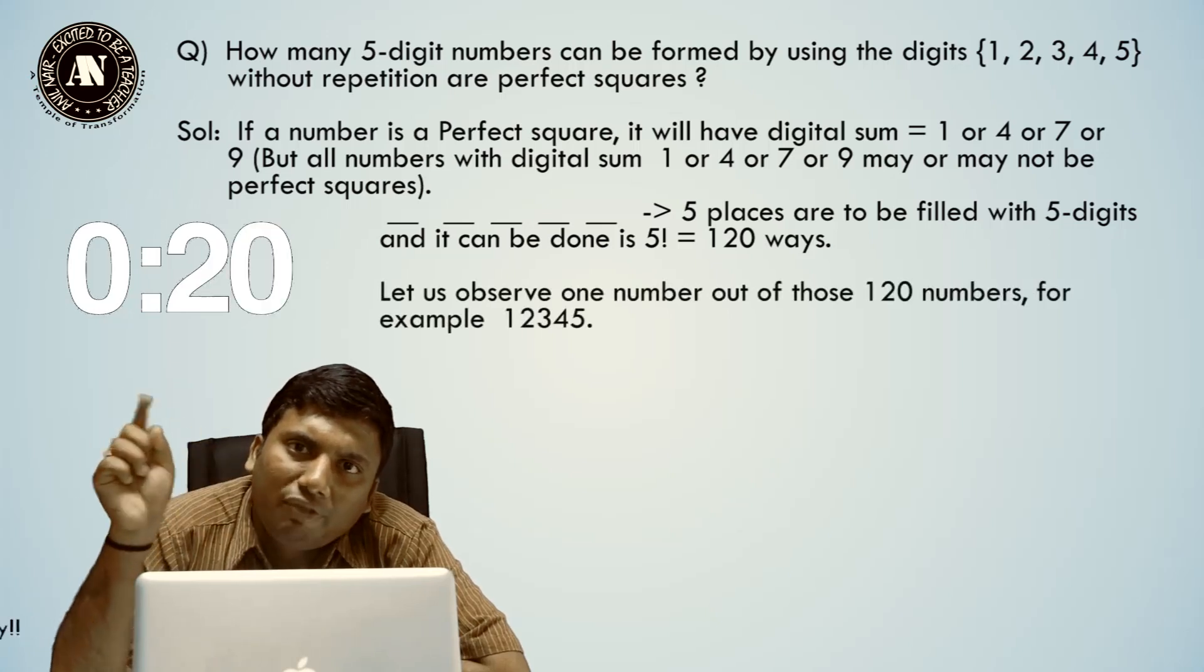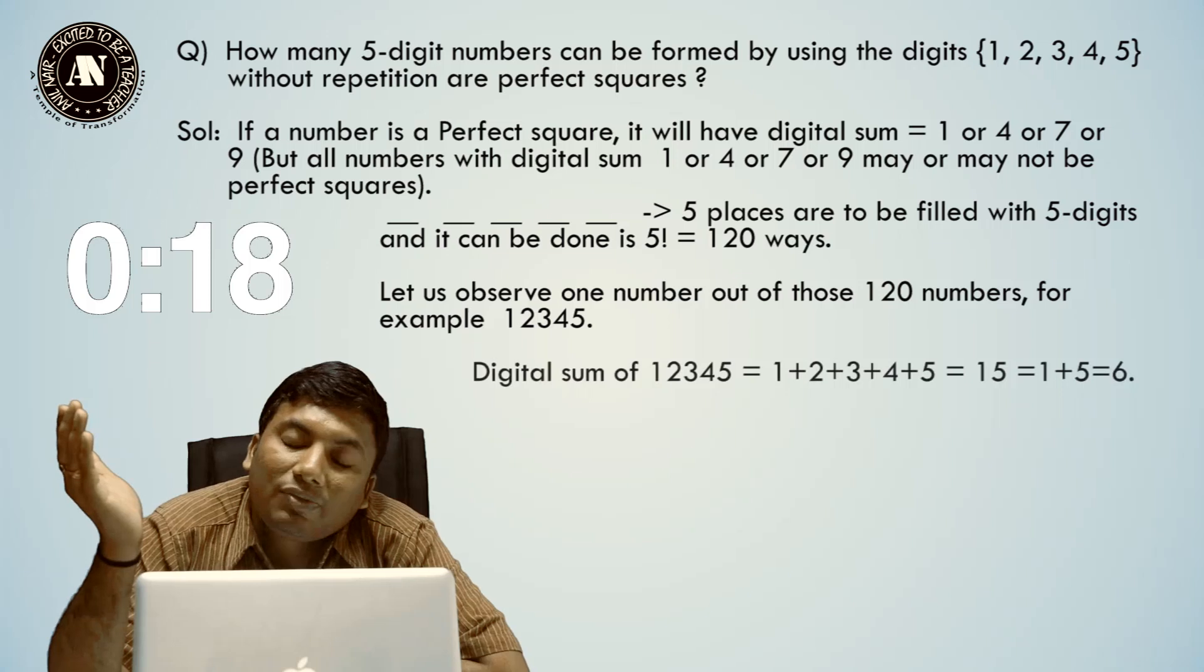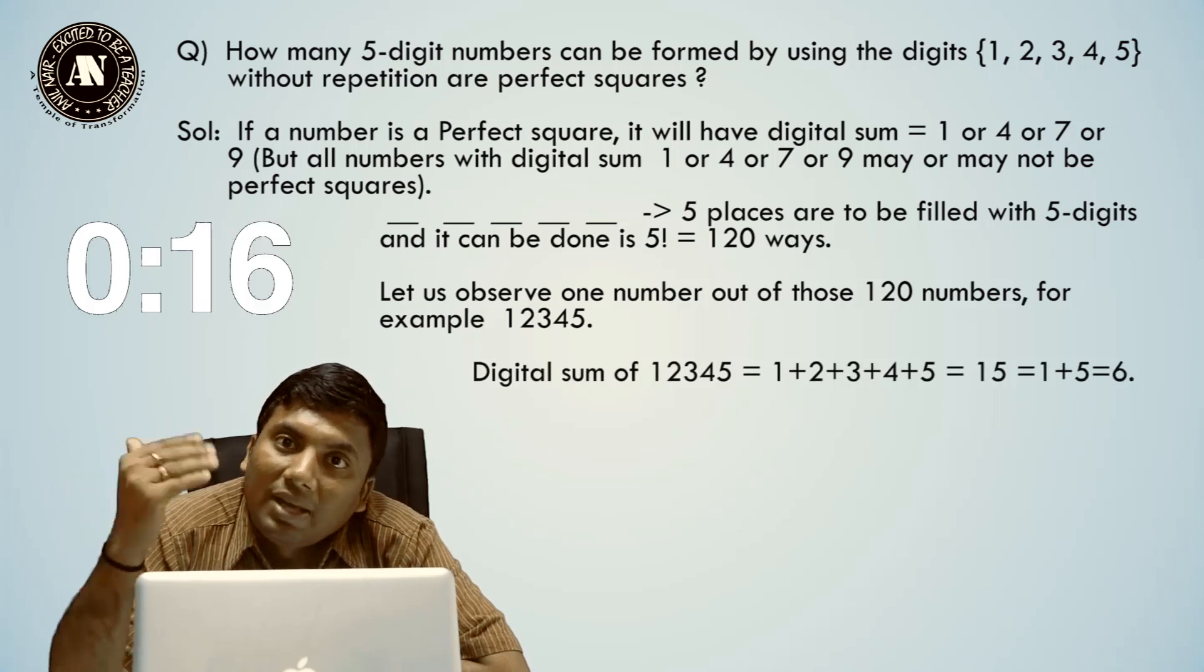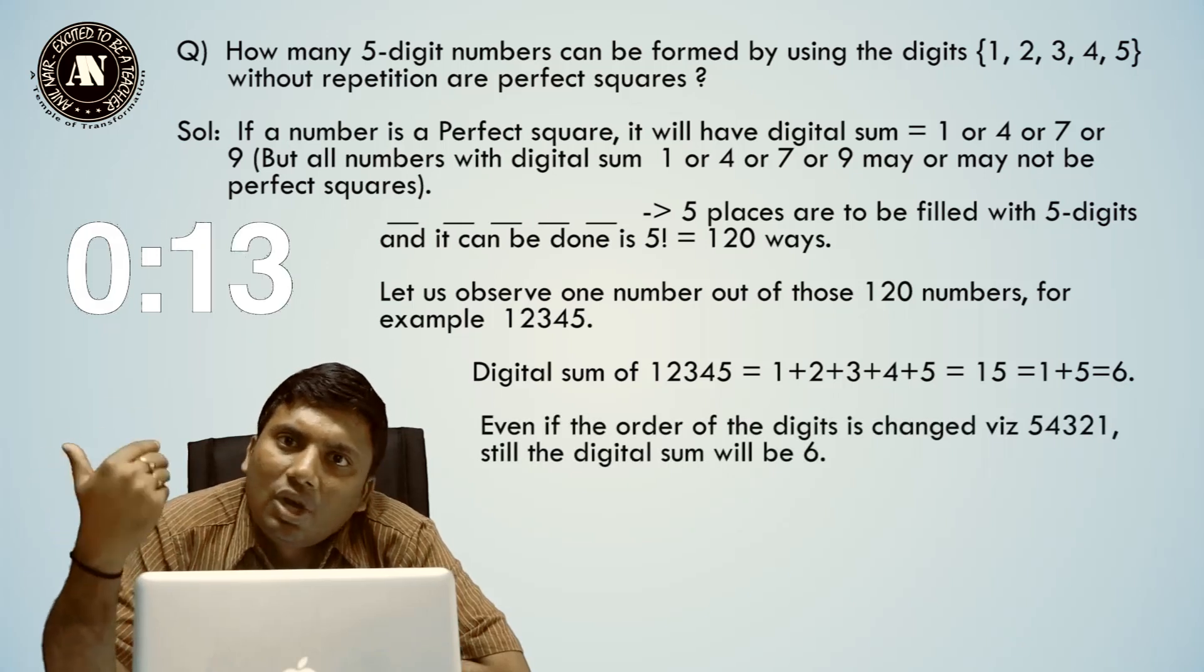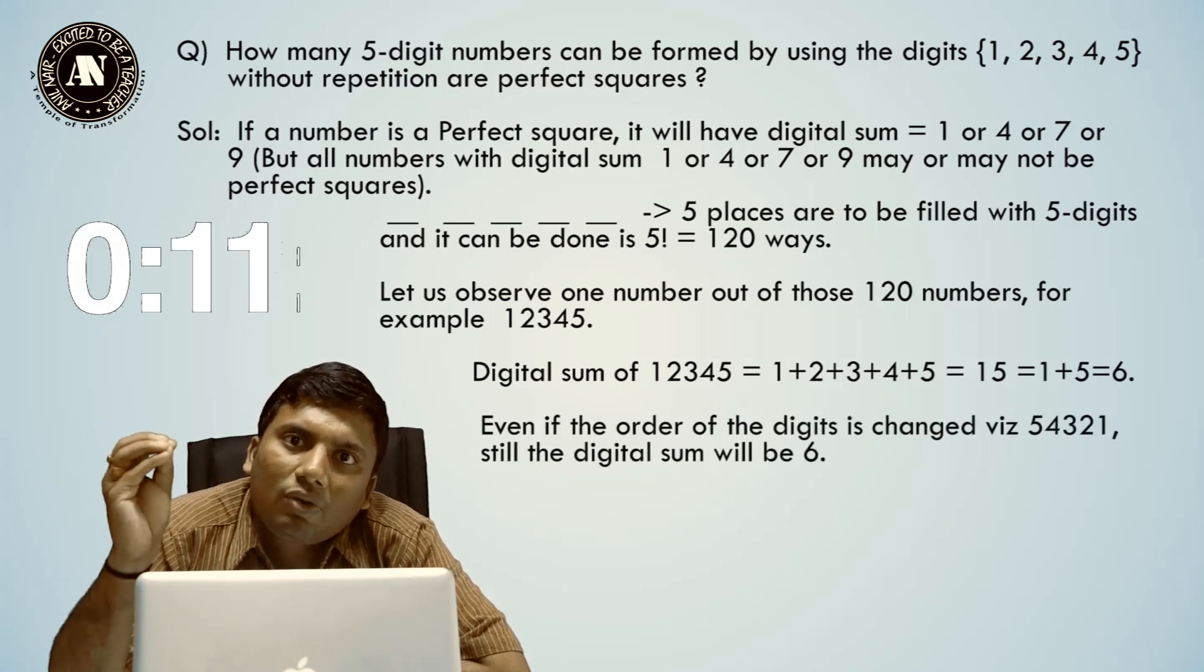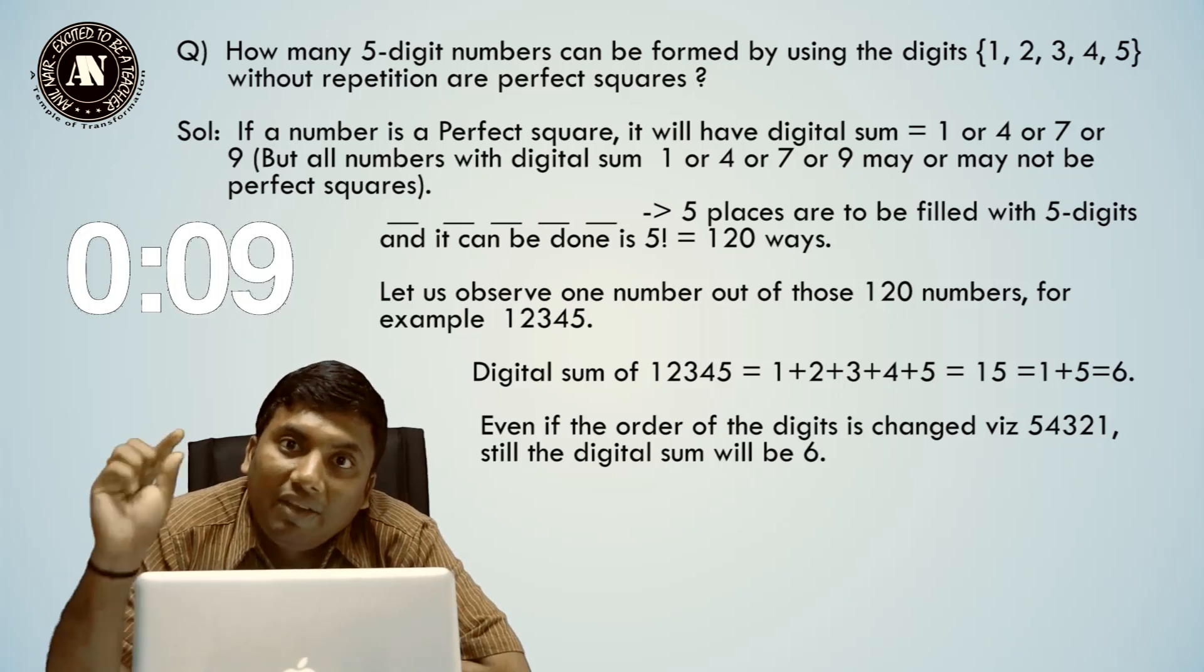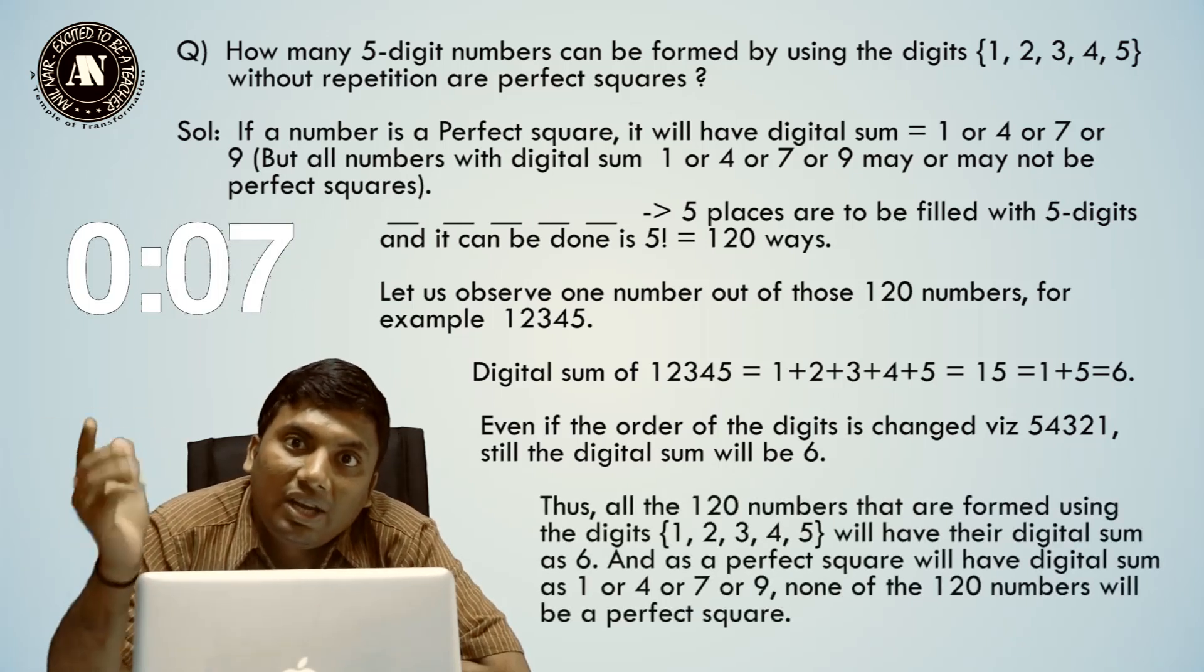What is the sum of the digits? 15. What is 15 digital sum? 1 plus 5 equals 6. If you change the order of the digits, will the digital sum change? No. That means all the 120 numbers are having a digital sum of 6.